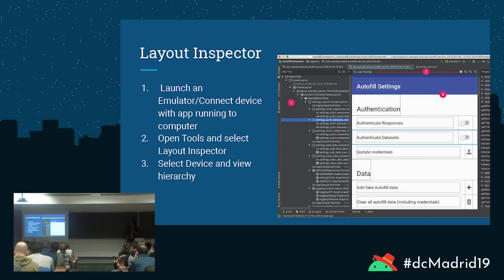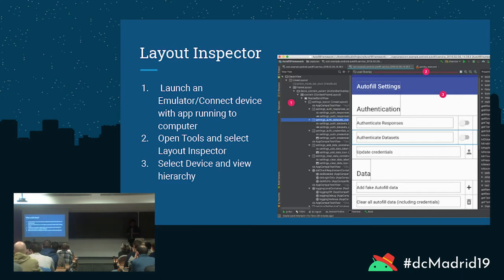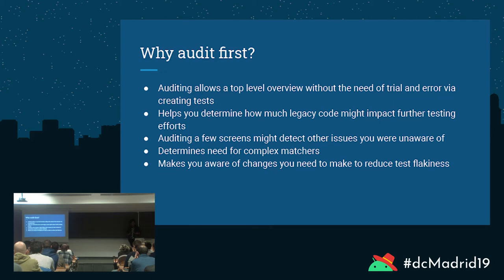Layout Inspector will give you a good idea of what the IDs are and where the text fields are available on screen. When we didn't audit years ago before we started writing more automated tests, we discovered we were actually missing a lot of content descriptions, text fields, and IDs. That was a large blocker for automation because it was a prerequisite. So this is a really good place to start.